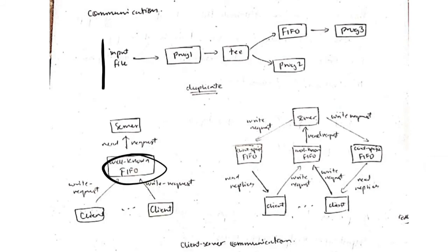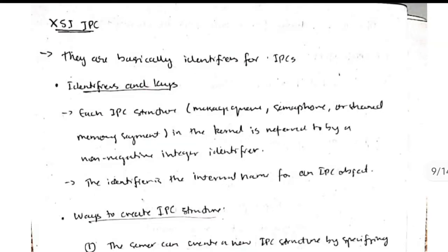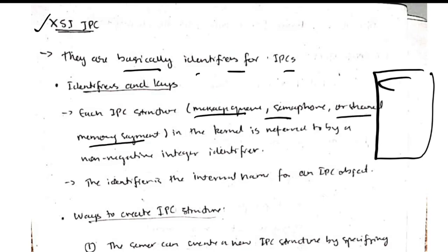Moving on, we have the XSI IPC which is basically the identifier for IPC. IPC is nothing but a file and it has the message queues, semaphore, or shared memory segment. The user ID of that is the XSI IPC, so it acts as an identifier.